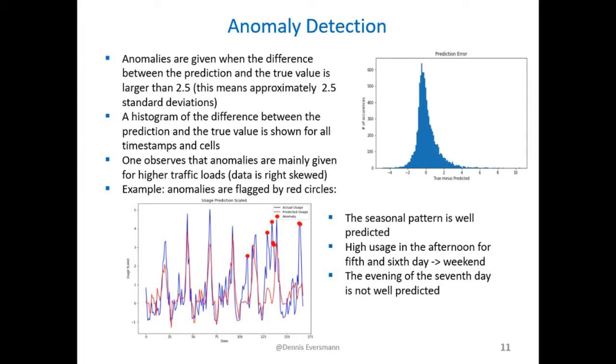Additionally, a time series is shown at the bottom on the slide where the anomalies are indicated by red circles. An anomaly is defined as an absolute difference between the predicted value and the true value of 2.5. So in this case, this model was very bad in predicting the structure during the weekend for this specific cell.